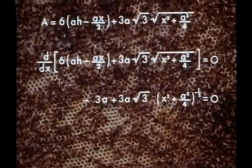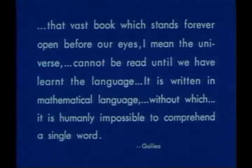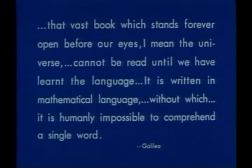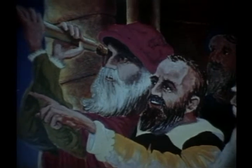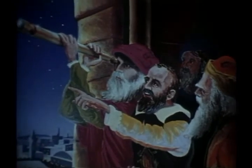But man could not understand the perfection of this pattern which the creator had given to the honeybee until after he understood the mathematics involved. For as Galileo noted, that vast book which stands forever open before our eyes — I mean the universe — cannot be read until we have learnt the language. It is written in mathematical language, without which it is humanly impossible to comprehend a single word. This insistence on the importance of mathematics made Galileo the father of modern science, for this discovery is the very cornerstone of science.